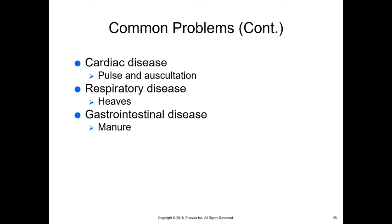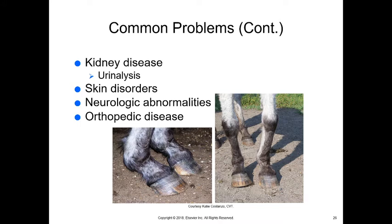For gastrointestinal disease, manure should be well-formed; loose manure may indicate changes in intestinal microbes. The intestinal bacteria of a grazing horse are extremely important, so probiotics, vitamin B, or other supplements may be needed to support GI function. Kidney disease is also a common issue in horses, so urinalysis combined with blood work is helpful. Skin disorders, neurologic abnormalities, and orthopedic disease with weakened tendons are also seen.